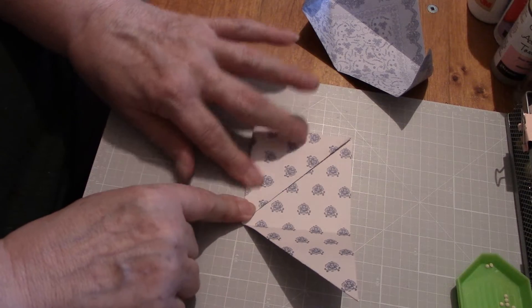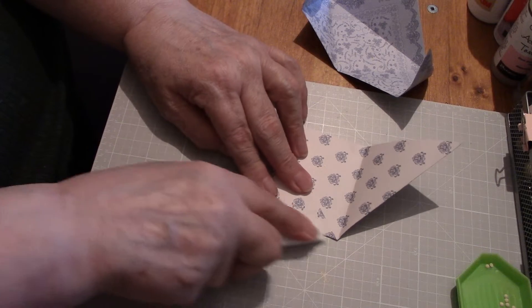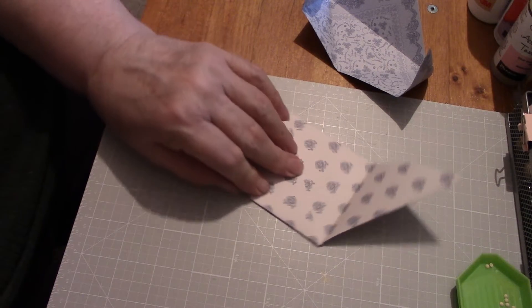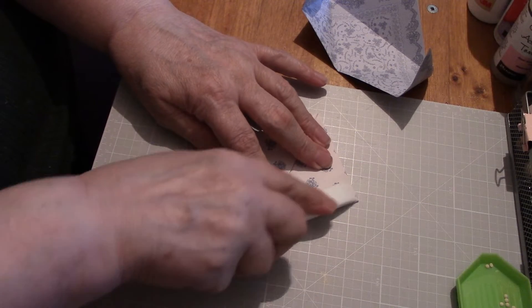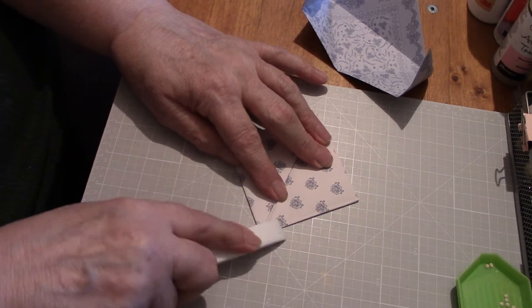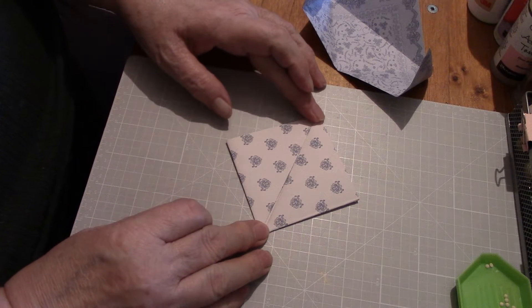There we go, and again bone folder. So that when you pull both corners up to the top, you've formed a square again.